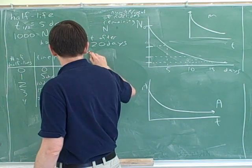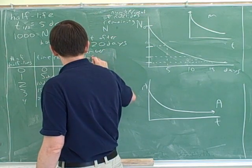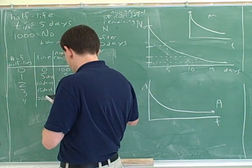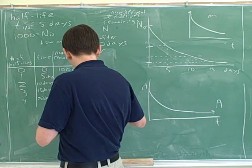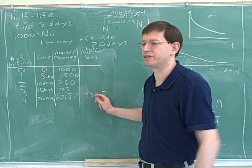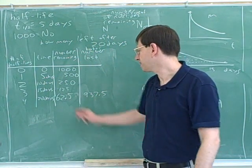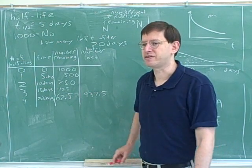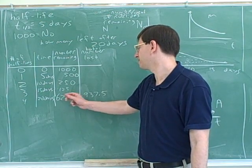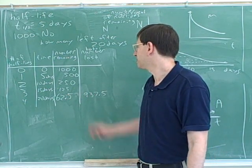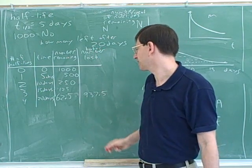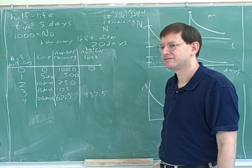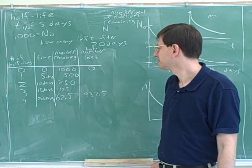So we can make another column for the number lost. If this is the total number lost, then this would be 1,000 minus 62.5, or 937.5. That's the total number lost up to this point. Basically, these two numbers should always add up to 1,000. If you start with 1,000 and only have this much left, the rest are the ones you've lost. So if this column represents the total number lost from the beginning, these two should add up to the original number. That's the mixing up of loss and remaining.